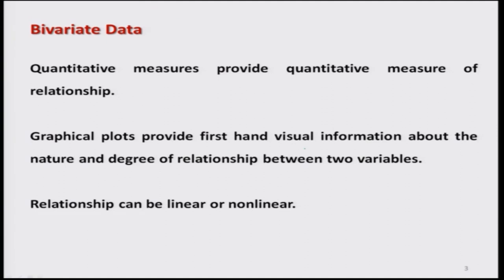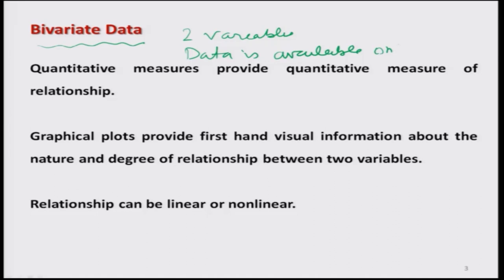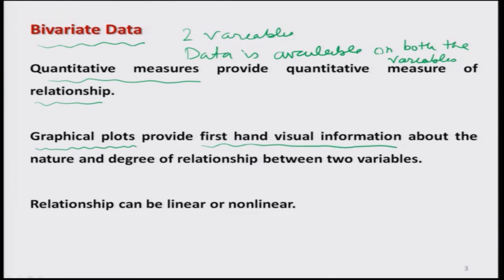Now we consider a bivariate data. Bivariate data means there are two variables and we have collected data on both variables. We want to quantify this relationship, and there are certain quantitative measures that provide a quantitative measurement of the relationship. Whenever data comes, we first try to use graphical plots and they give us first-hand visual information about the nature and degree of the relationship between the two variables.